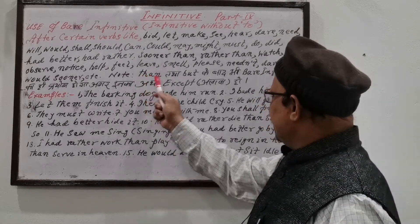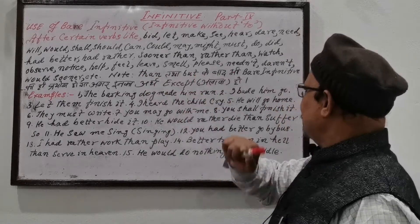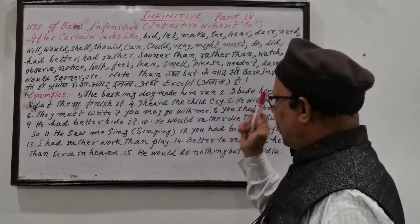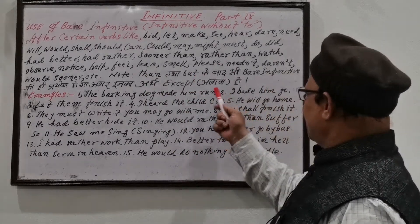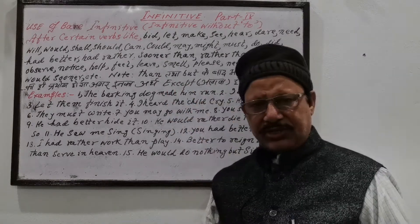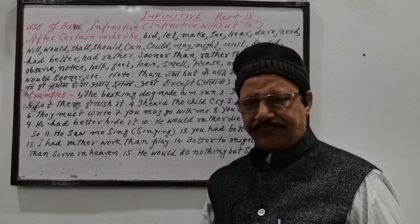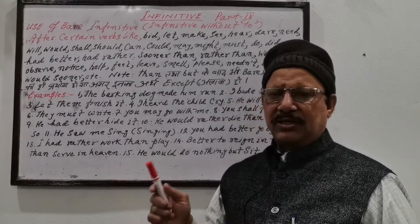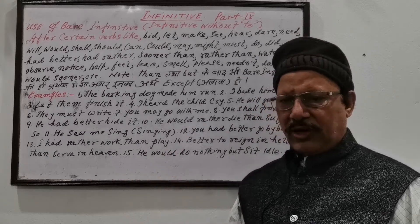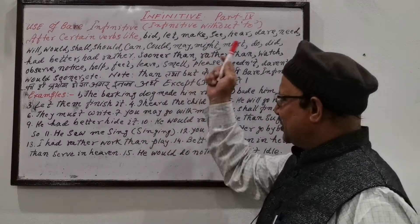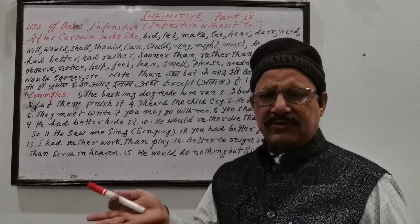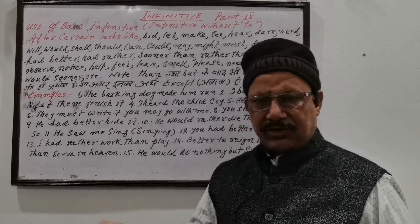Even after 'than' and 'but' — these are also bare infinitive constructions. If 'except' is used in a sentence, with these too, the preposition 'to' will not be used. These are all bare infinitives — infinitives without 'to'.